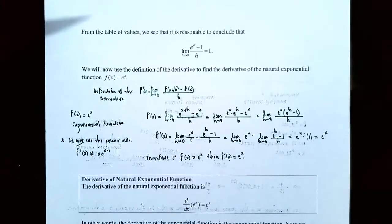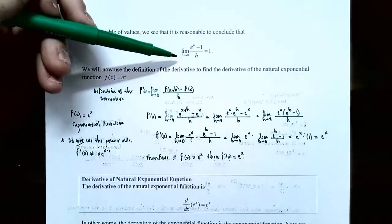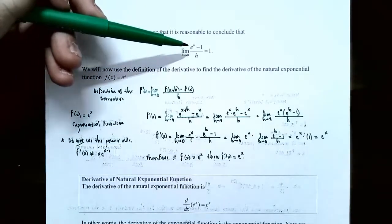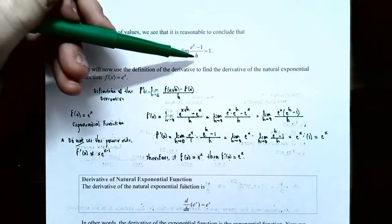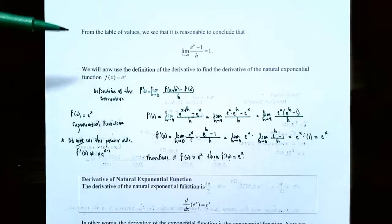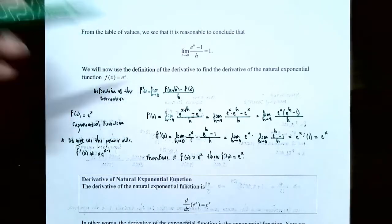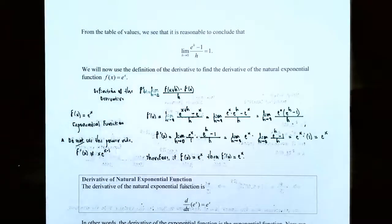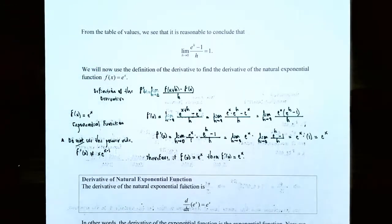From the table of values, it's very reasonable to conclude that the limit as h approaches 0 of e to the h subtract 1, all divided by h, equals 1. We're going to use this fact along with the definition of the derivative using limits to find the derivative of the natural exponential function, f of x equals e to the x.